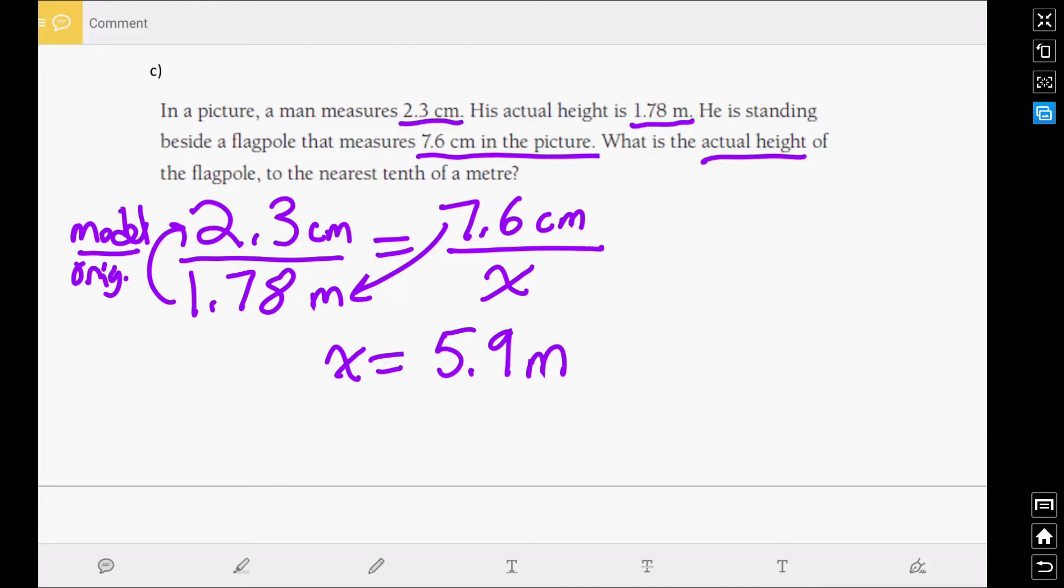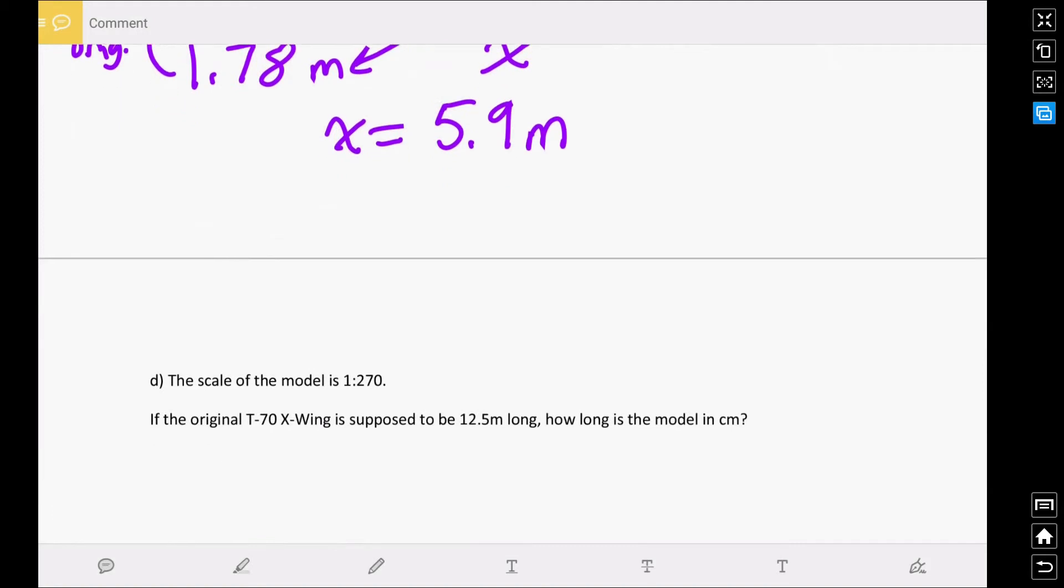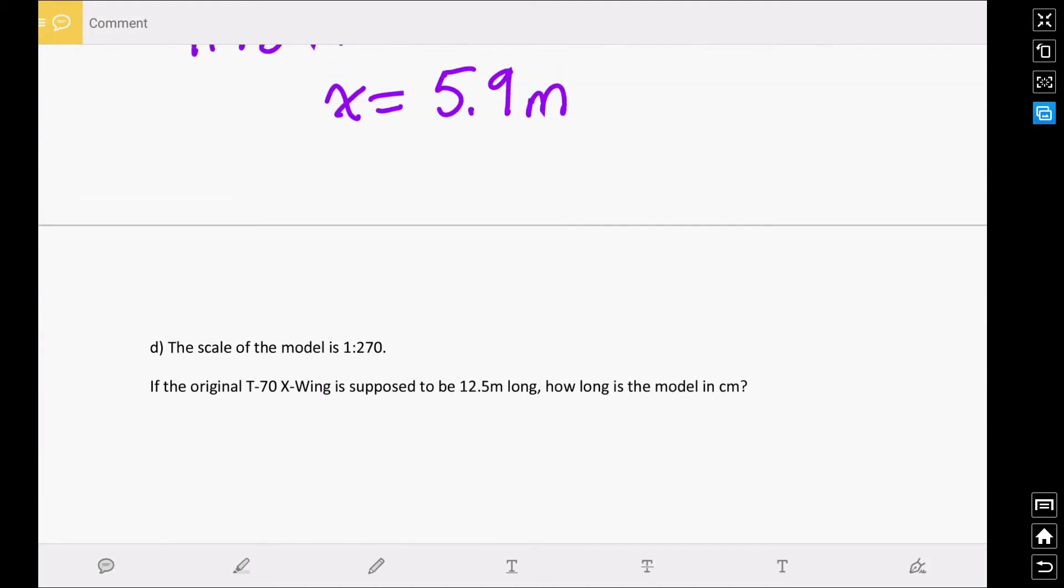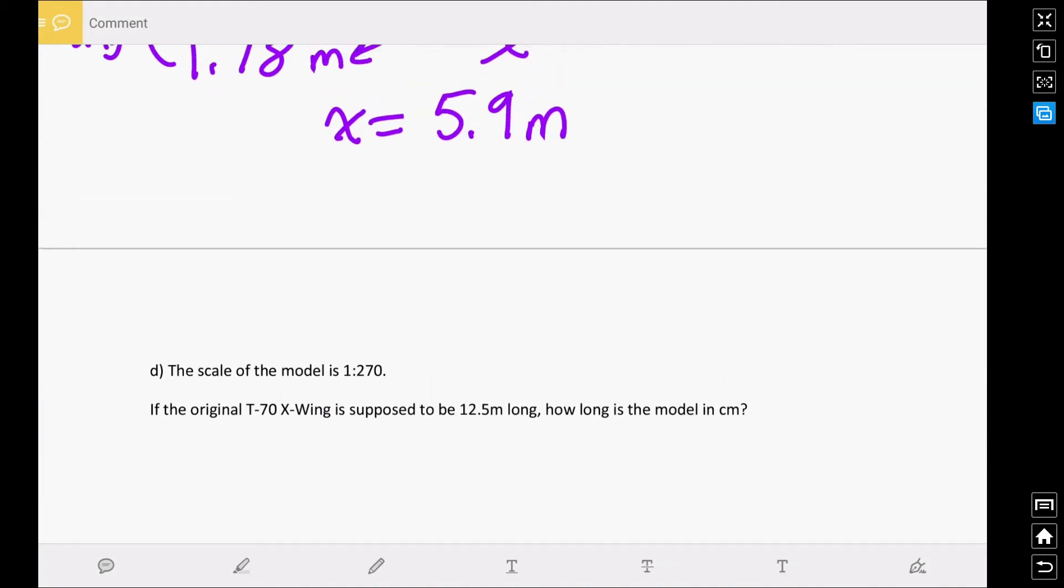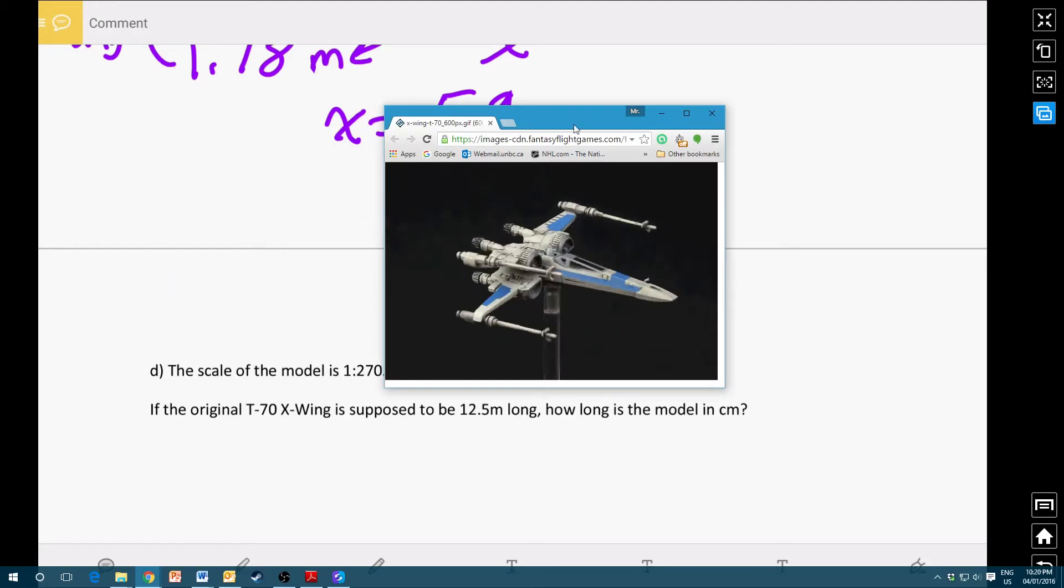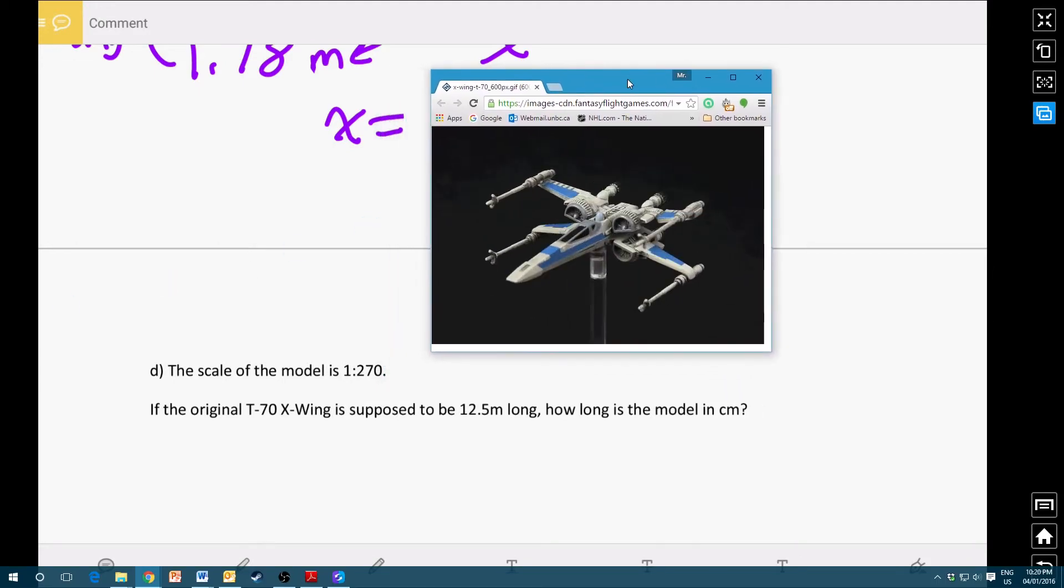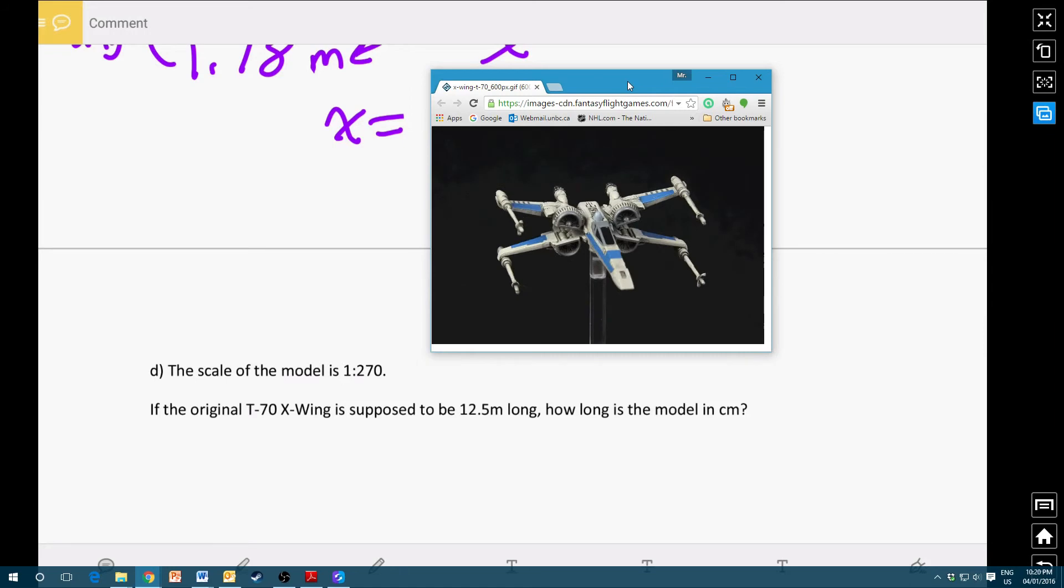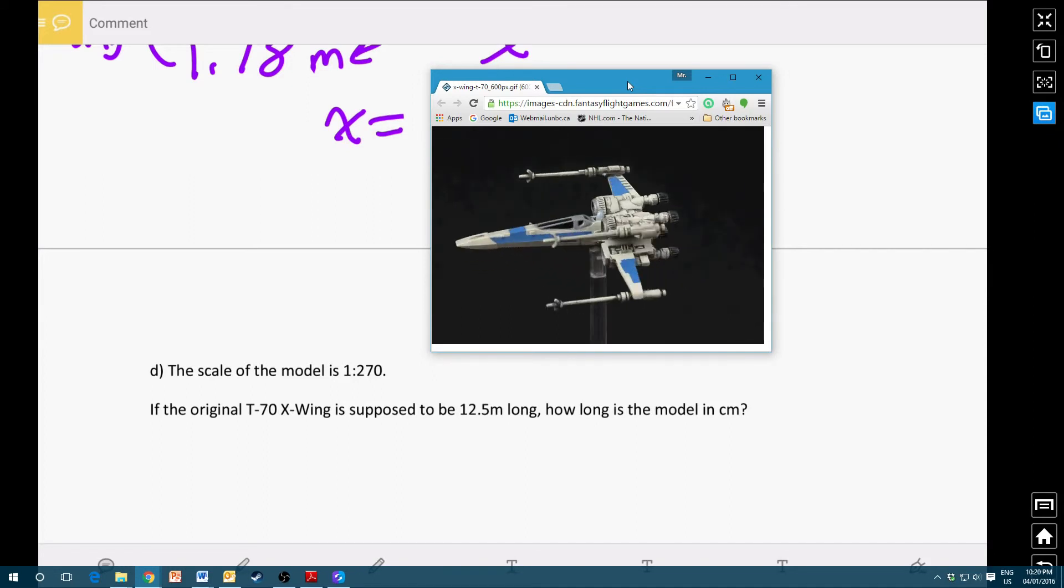The next example, I'll show you a picture of a model. So here, this is the model of a, from the new Star Wars, the T-70 X-Wing. It's quite a nice looking model. The scale of this model is 1 to 270. So this model is 270 times smaller than the original. So that's what that scale of the model is saying.